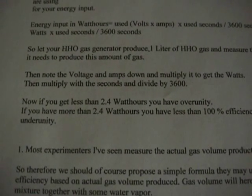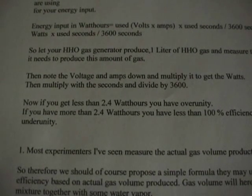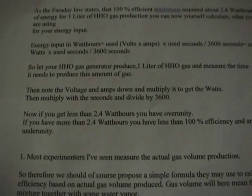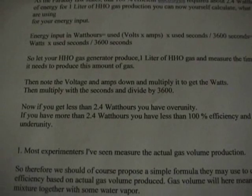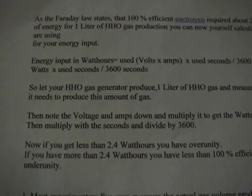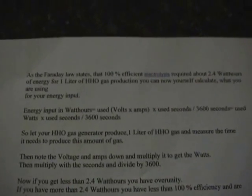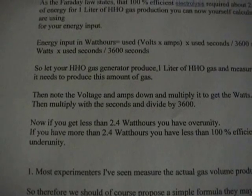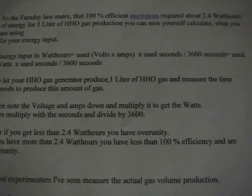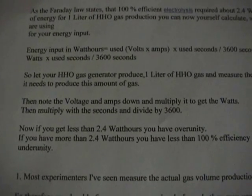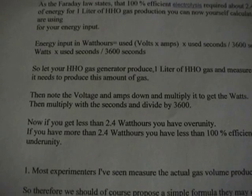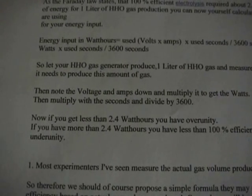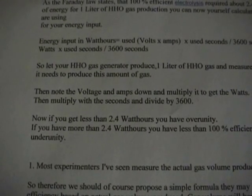If you get less than 2.4 watt-hours, you have over unity. If you have more than 2.4 watt-hours, then you have less than 100% efficiency and are under unity. The equation works like this: produce one liter of HHO gas and measure the time needed. Then note the voltage and amps and multiply to get the watts. Then multiply by the seconds and divide by 3600.